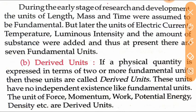Derived units are those where a physical quantity is expressed in terms of two or more fundamental units. For example, speed is length divided by time. Examples include units of force, momentum, work, potential energy, and density—all are derived units.